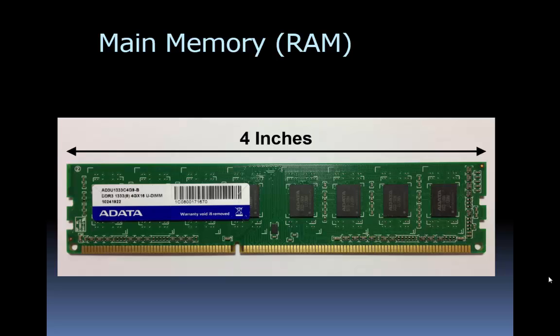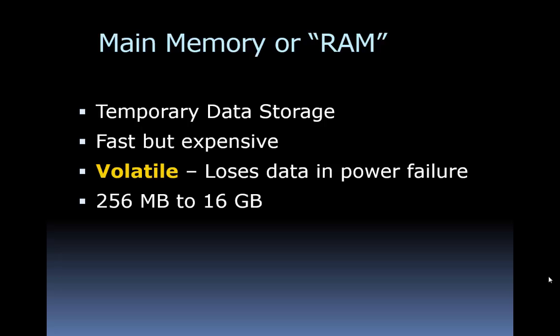If you look at memory or RAM, it looks like a little printed circuit board about four inches long with a couple of chips on it, each of which holds a lot of data. It's basically very temporary data storage — it's fast but it's expensive. We call it volatile, meaning that it loses its data in a power failure.